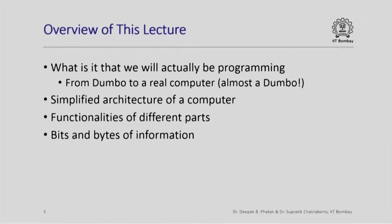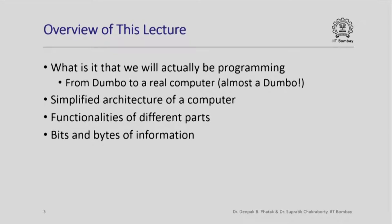In this lecture we are actually going to see in a little bit of detail what it is that we will actually be programming. Essentially, from the Dumbo model of computation we are going to move towards a real computer, which is almost like Dumbo. We will see a lot of similarities between what we have seen for Dumbo and what a real computer contains. We would like to see what this real computer is, what are its different parts, what is its architecture, what do the different parts do, and how is information represented inside a real computer. So that is our agenda for this lecture.